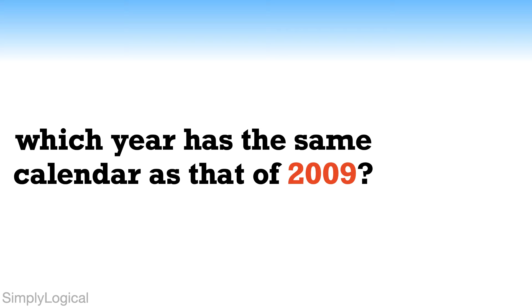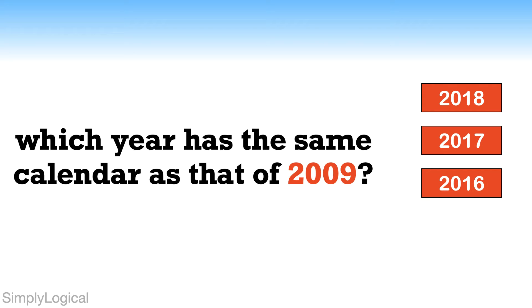It states which year has the same calendar as that of 2009. You are given four options: option 1, 2018; option 2, 2017; option 3, 2016; and option 4, 2015.